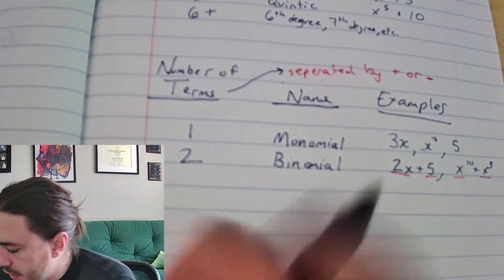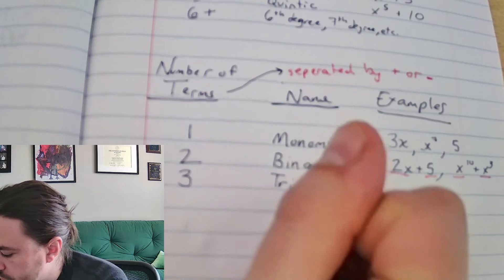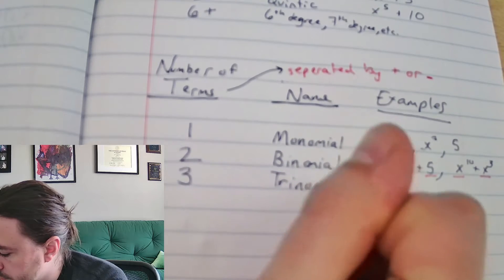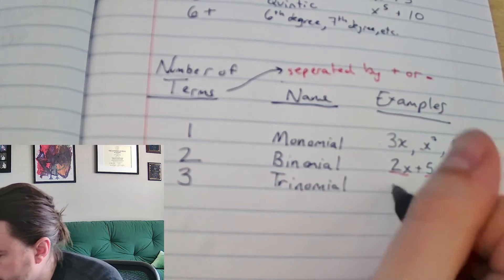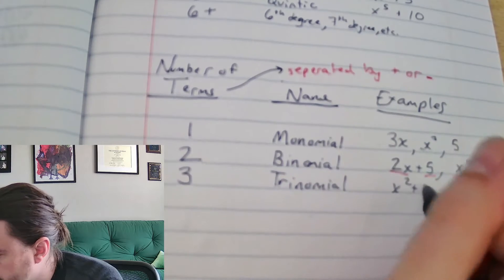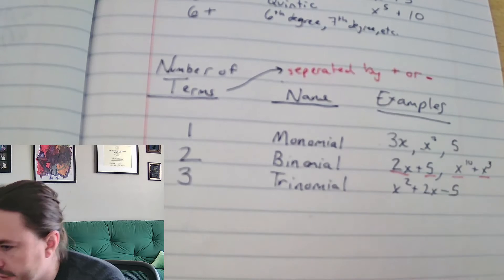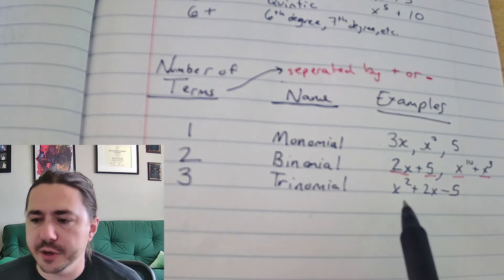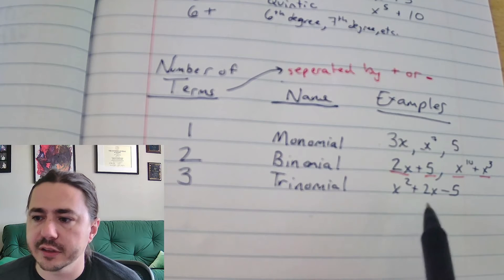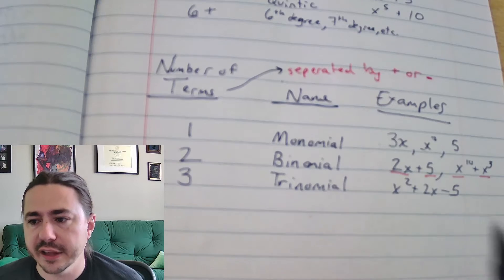If you have three terms, that's called a trinomial. Something like x squared plus 2x minus 5 — notice we have three terms there: the x squared, the 2x, and the negative 5.